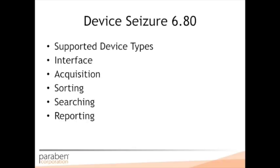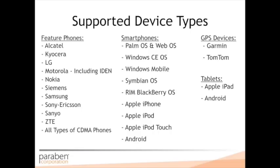First we're going to walk through Device Seizure 6.80. This is an outline of what I'm going to cover. We're going to talk about our supported device types, then I'm going to show you the interface, do some acquisitions, show you some of the analytics such as sorting and searching, and then finally close out with some reporting options.